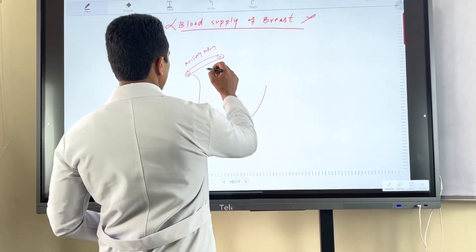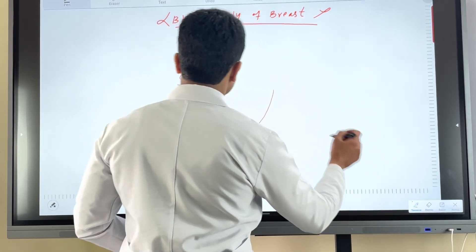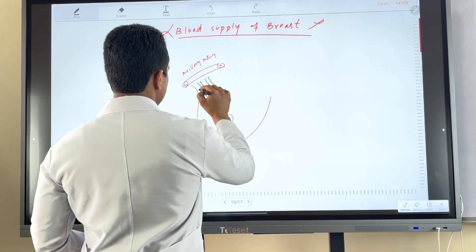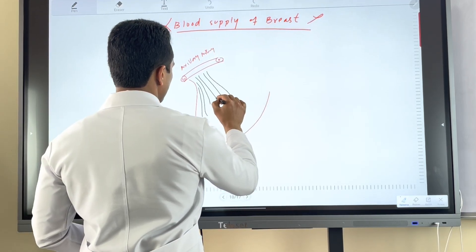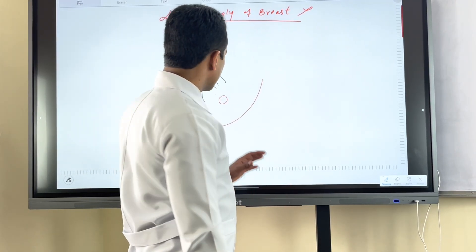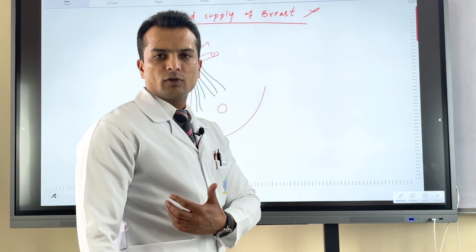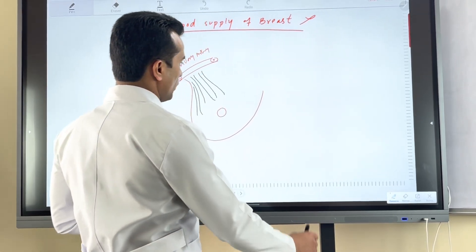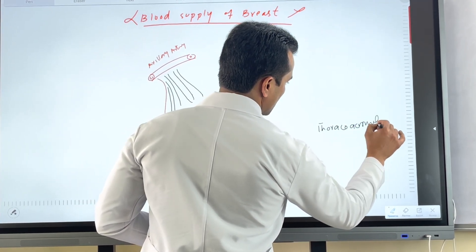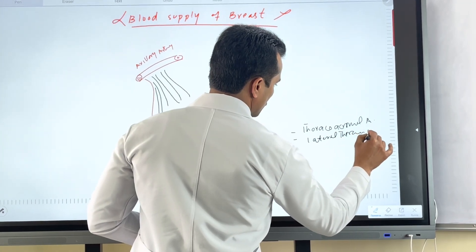The branches of the axillary artery which supply blood to the breast tissue in the lateral and outer quadrant are the thoracoacromial artery and the lateral thoracic artery.